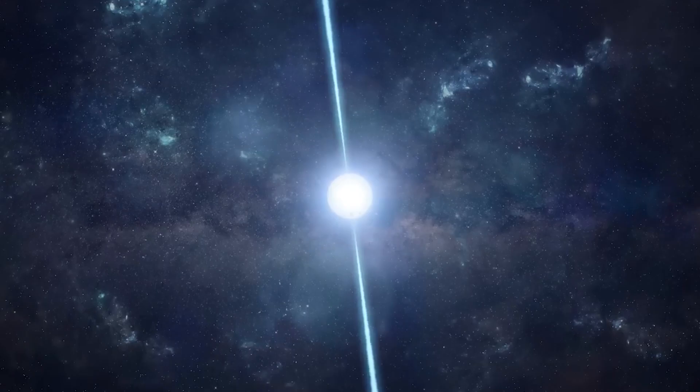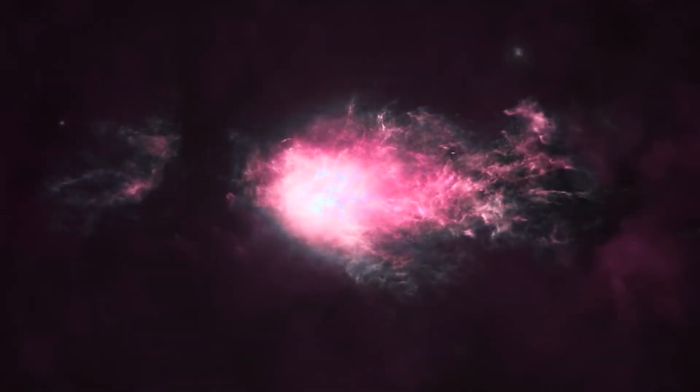Over time, the cycle can cause the star to become noticeably more or less bright when viewed from Earth. Betelgeuse, nearing the end of its life cycle as a red supergiant, exhibits these convective and pulsating behaviors more intensely.